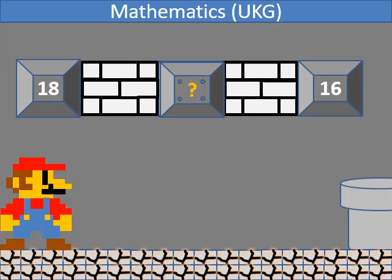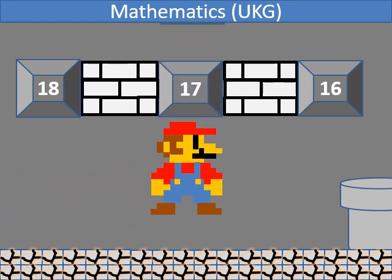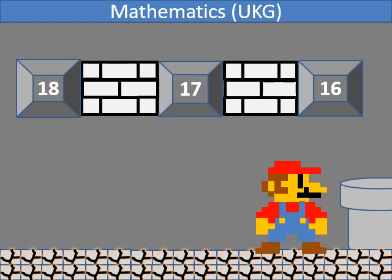In backward counting, which number comes between 18 and 16? 17.